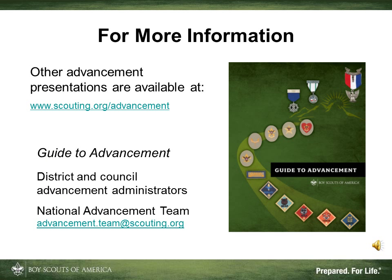There are other presentations available on boards of review, Eagle boards of review, boards of review under disputed circumstances, the Eagle scout project, and the Eagle application. If you have any other questions about appeals to boards of review, consult the Guide to Advancement. You can also talk to your district and council advancement coordinators — it's important to start with them. If you're still stumped, you can email the national advancement team at advancement.team@scouting.org.